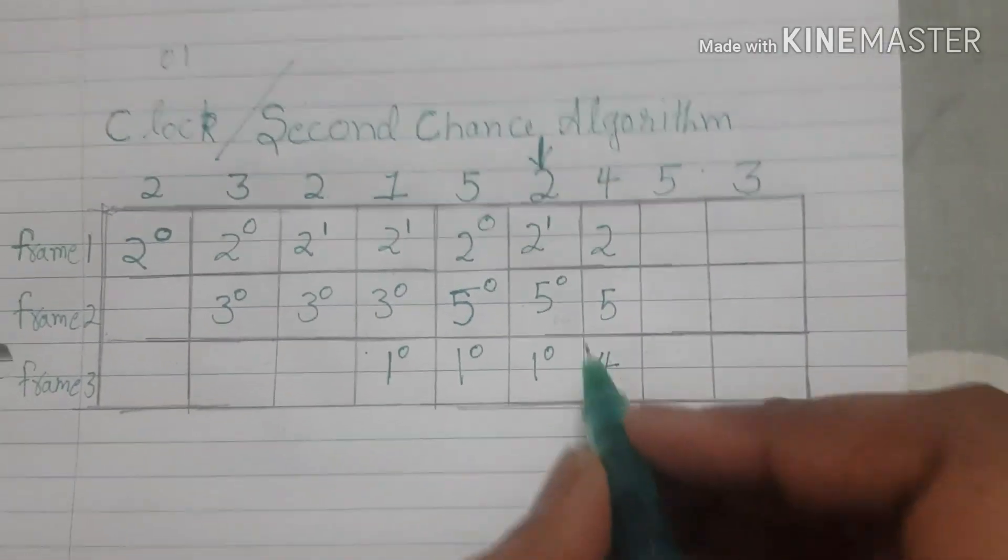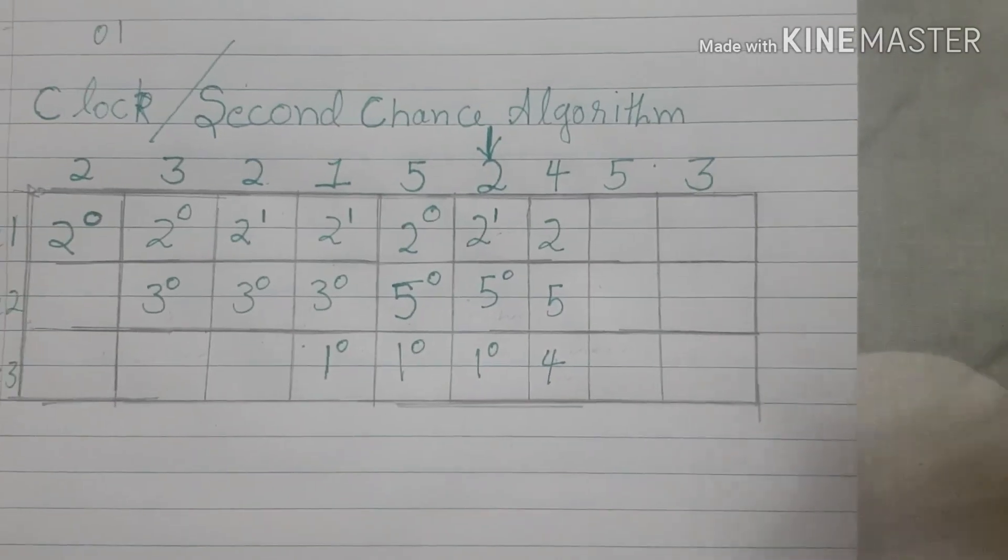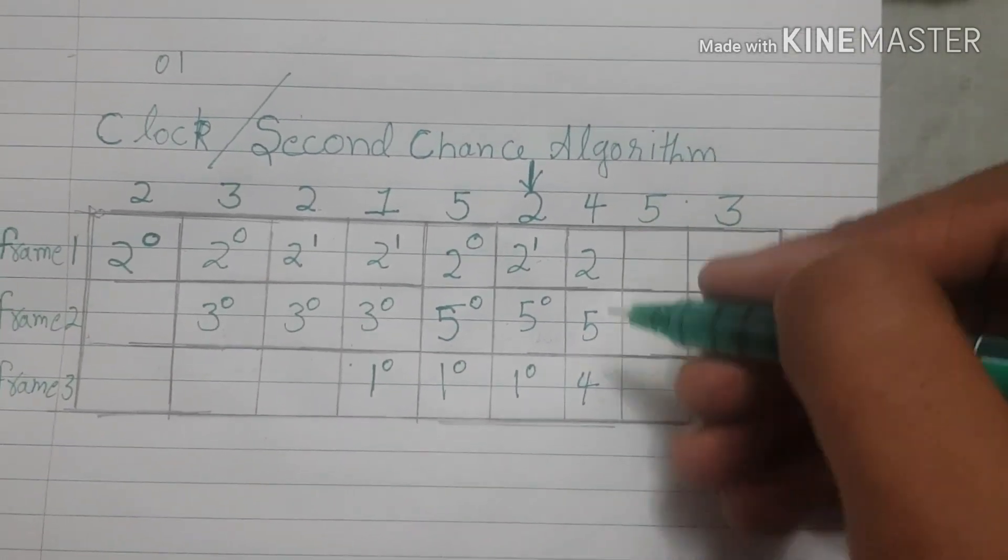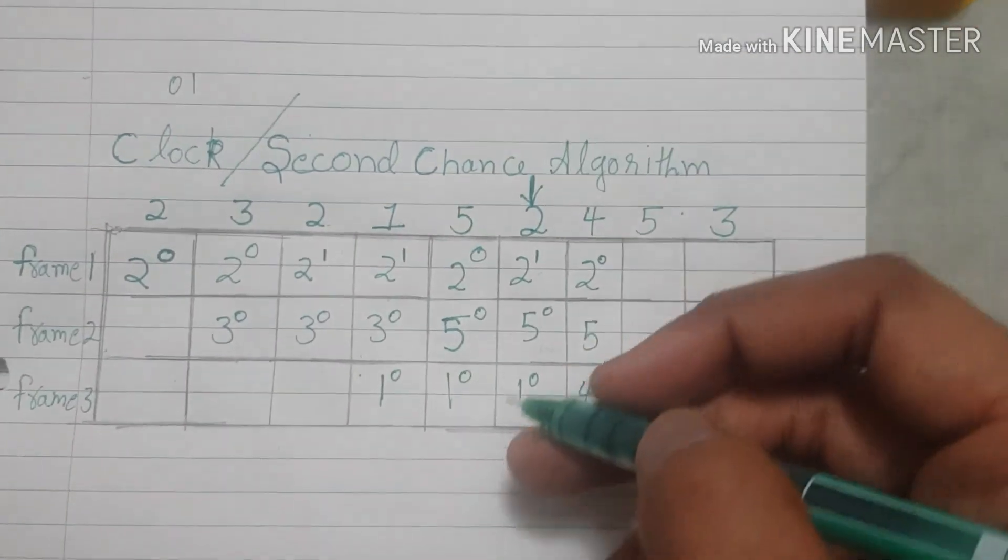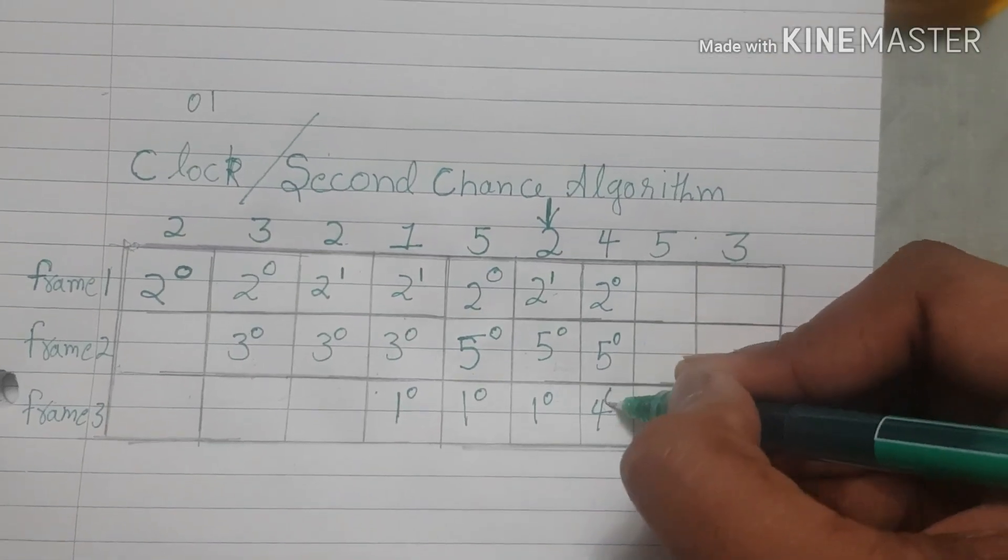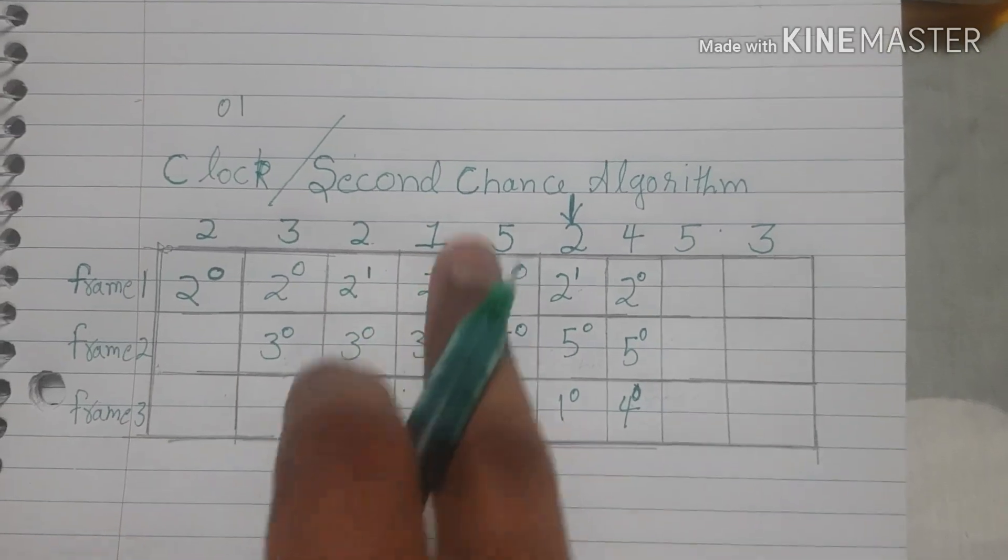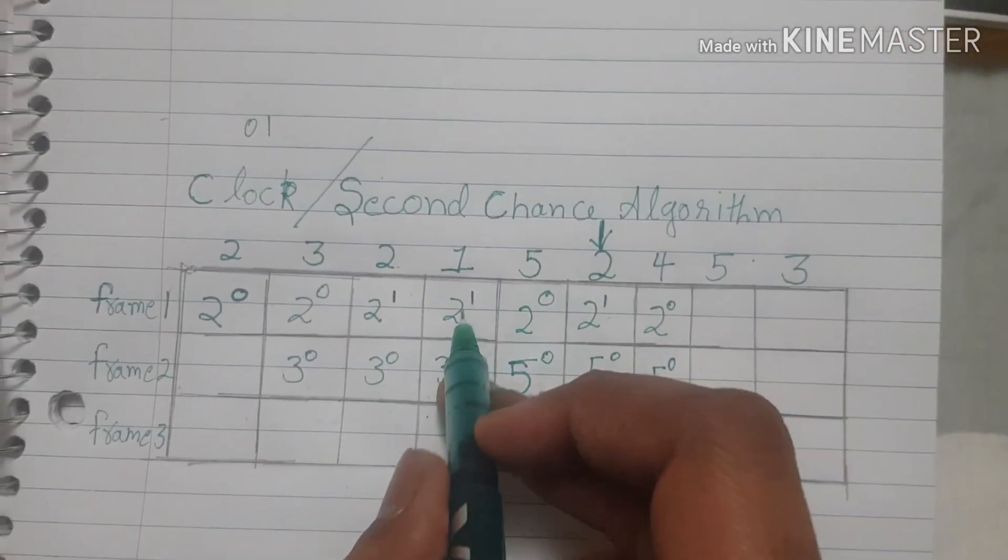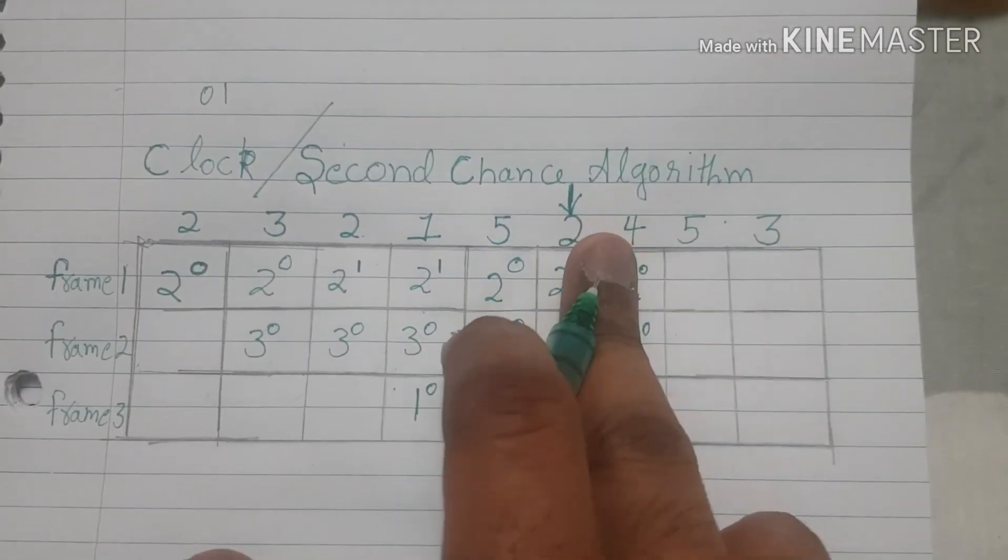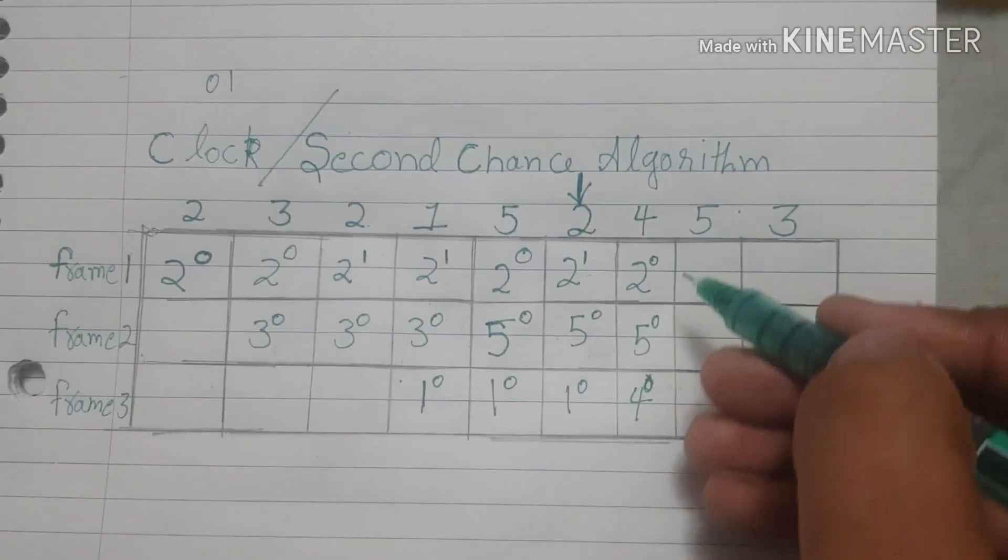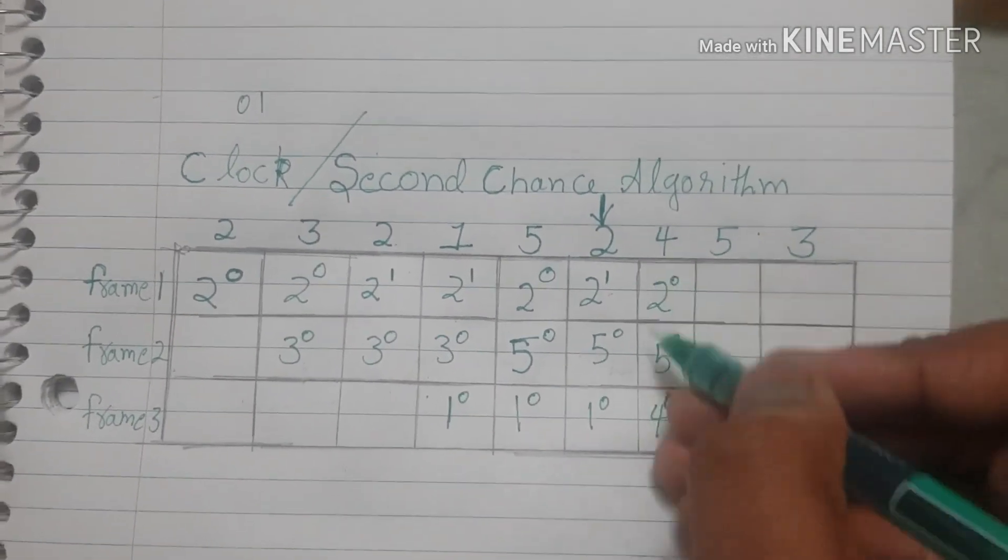What happens is here we faced a page fault, and this is important part as well. So whenever we have a page fault, we have to turn the bit for every frame that we have to 0. Either it goes by the way that happened here, it was turned to 0 by following the first in first out principle, or just in case we didn't reach it.